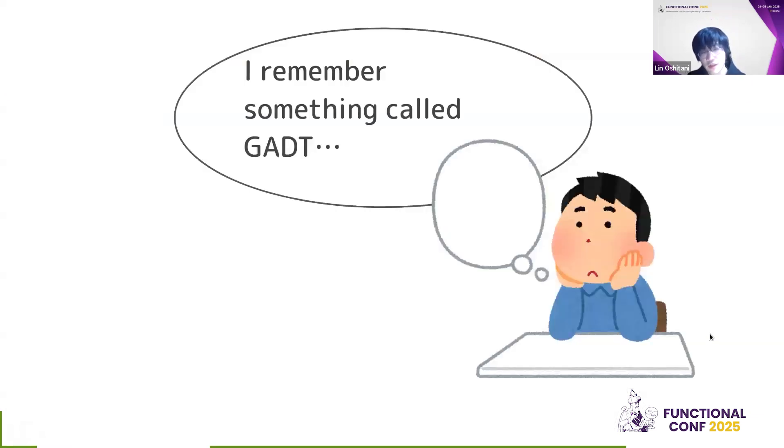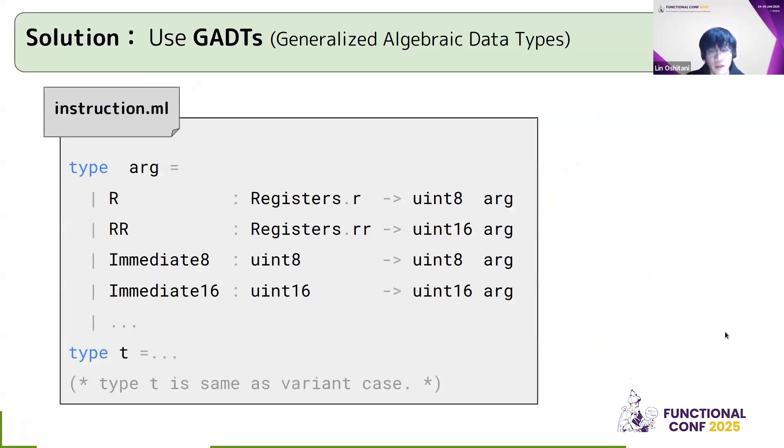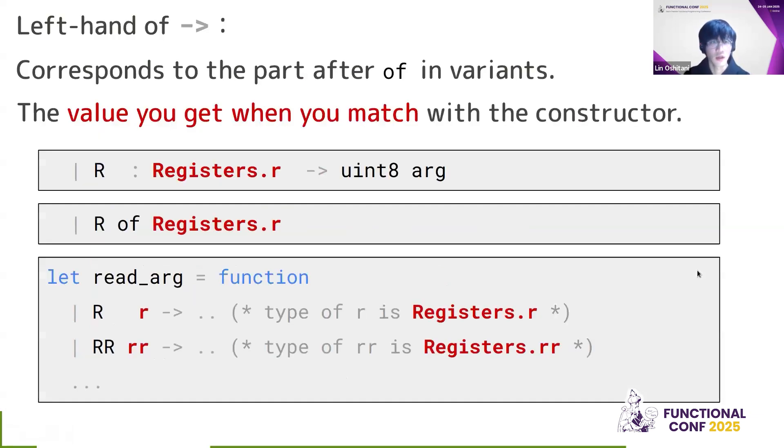Okay, at this point, I remember there was something called GADTs that I read about when I was learning OCaml, but I quite didn't really get. But maybe I can use that here. And yeah, so the solution was actually to use GADTs. And here is the instruction set that uses GADTs. The type T is the same, but the arguments, they're defined in a different way using GADTs. Now, it looks pretty different from the variant case, specifically this part. What does this actually mean?